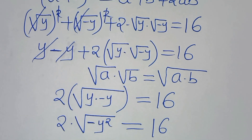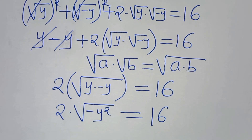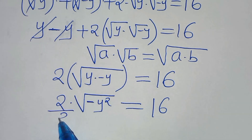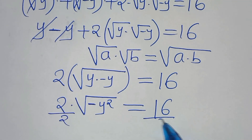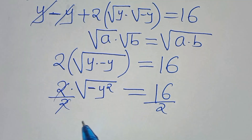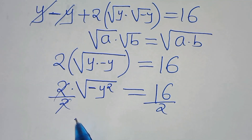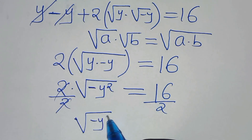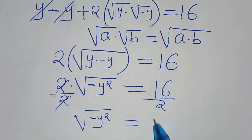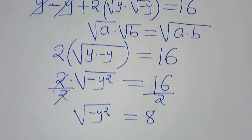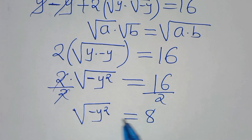We have 2 multiplied by the square root of minus y squared equals 16. Dividing both sides by 2, we get the square root of minus y squared equals 8.